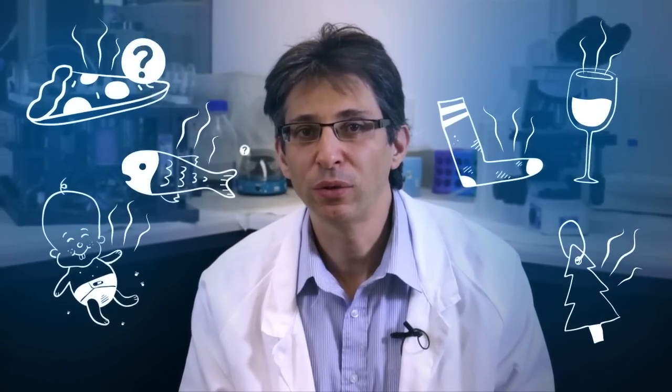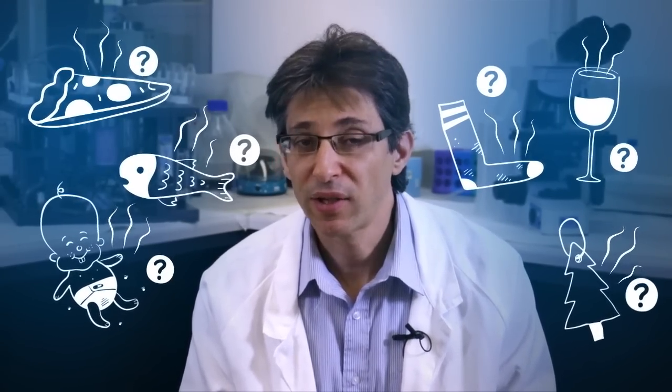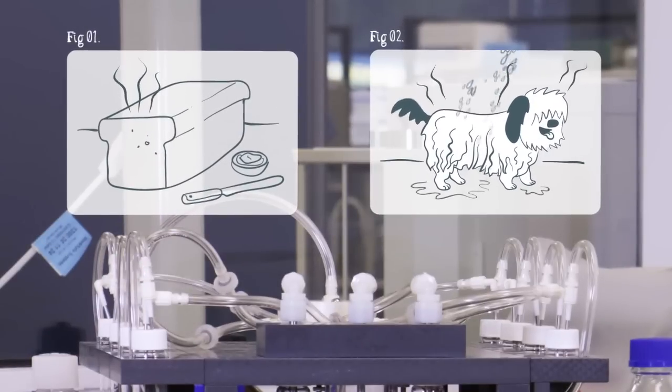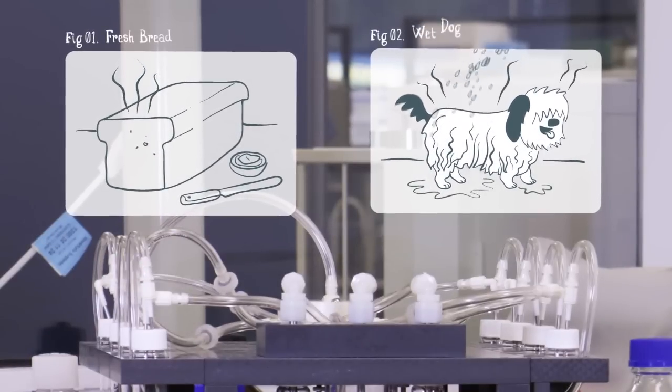The end result is that we are able to discriminate between a vast number of different kinds of smells. Despite this, we find it difficult to describe smells as our naming system isn't as developed as the other senses. We tend to name smells after the thing that produces it, such as fresh bread or wet dog.